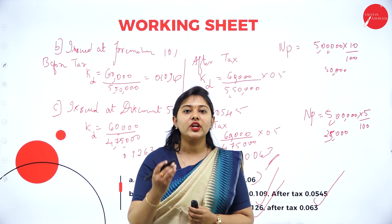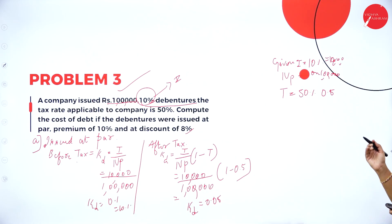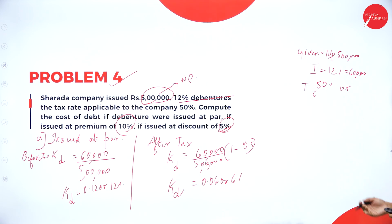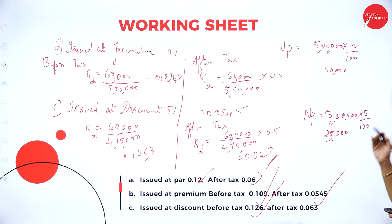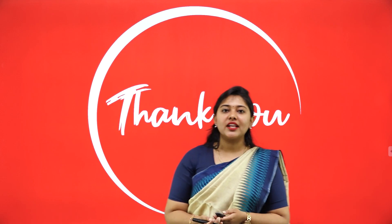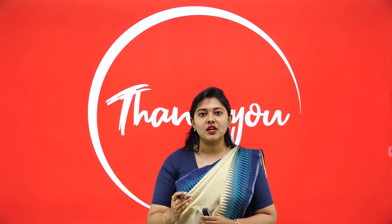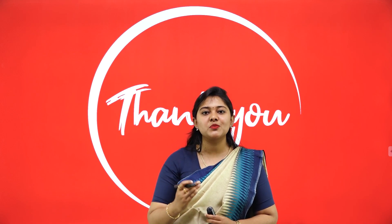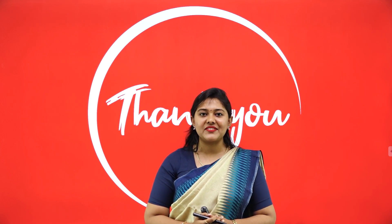You can take a screenshot now. Problem Number 3 covered issued at par — before and after tax with the formula. Problem Number 4 covered issued at par, at a premium, and at a discount — before and after tax. That's it for today, my dear students. Hope you have understood. In the next class, we will be discussing problems on redeemable debt issued at par, premium, or discount. Stay tuned, stay blessed, keep smiling. Smile is the biggest jewel you can wear. Thank you so much.